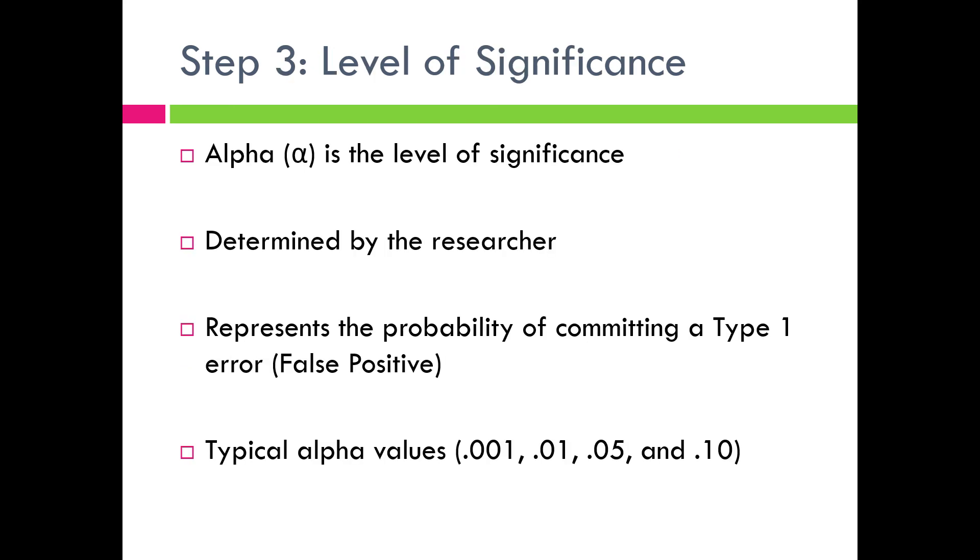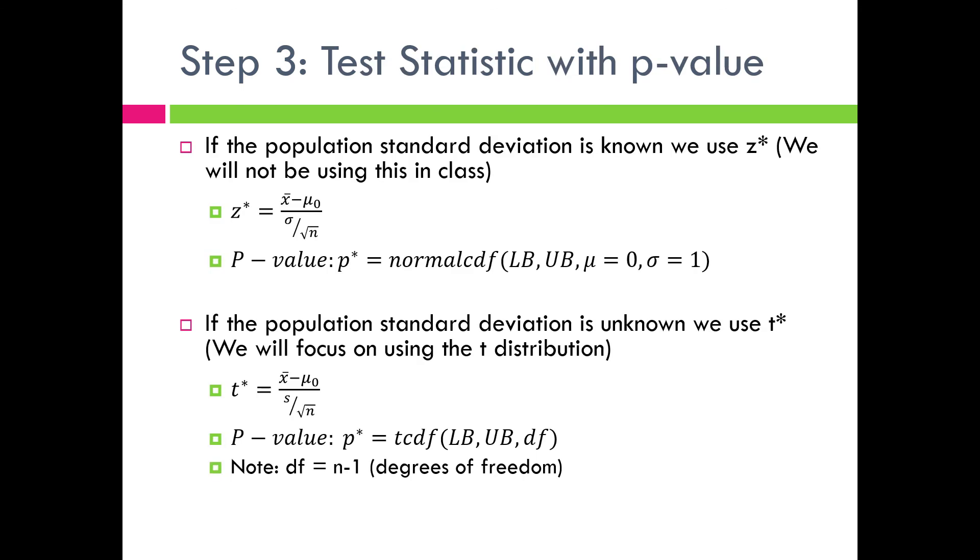So in step three, we have two parts, or at least I usually do this in two parts. We look at the level of significance, that's our alpha value. Typically, this is determined before we go and gather any data, and it's determined by either the researcher or with some sort of team that's doing this research prior to collecting the data. This represents the probability of committing what's called type one error, which is a false positive. Typical alpha values are 0.001, 0.01, 0.05, and 0.10. I'd say most textbooks predominantly use 0.05 as the alpha value.